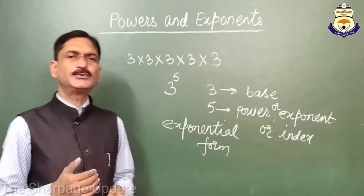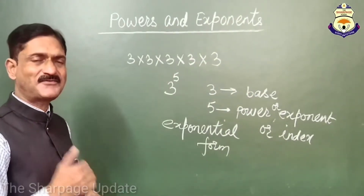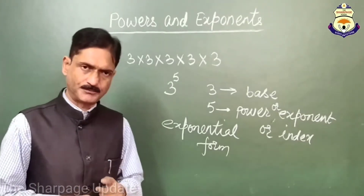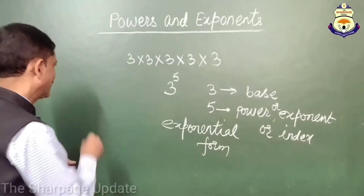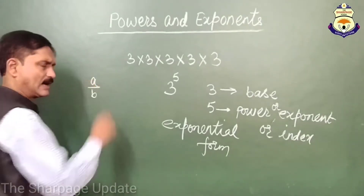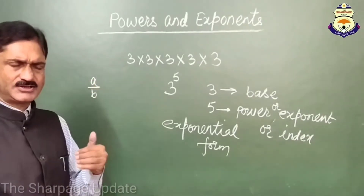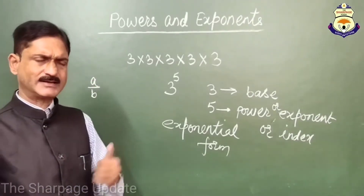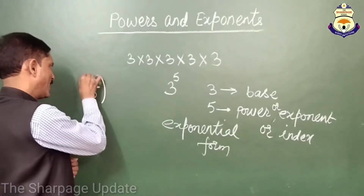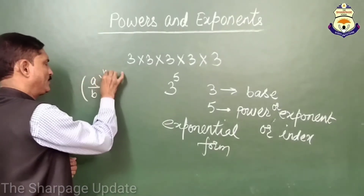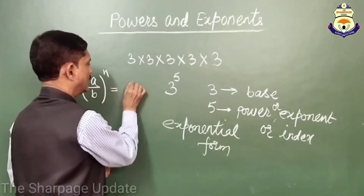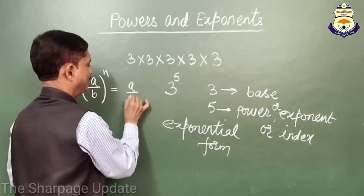Now friends, I am telling you some basic facts about the exponent or exponential form. If a/b is a non-zero positive rational number, then (a/b) to the power n is always a positive number.